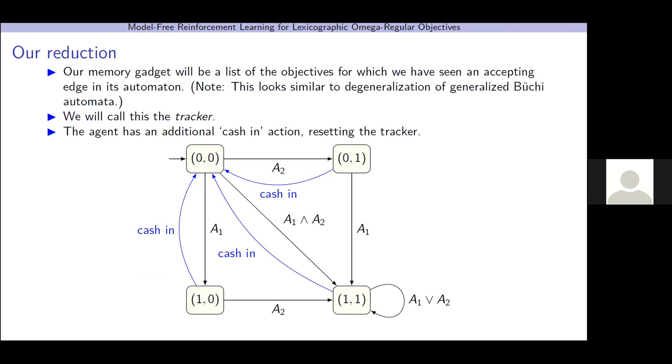Below, I have an example tracker for where we have two properties. So, as an example, say that we start in this initial state, where our bit vector indicates that we haven't seen accepting edges for any of the properties yet, and say that we see an accepting edge for the first property. We'll flip its bit to 1. I've also omitted the self-loops here, so if we see no accepting edges, the tracker's state will remain the same.